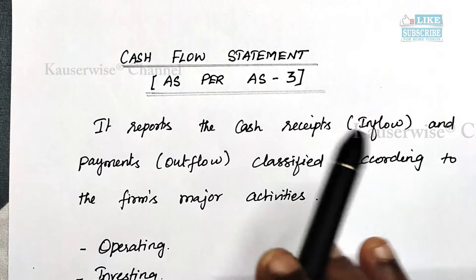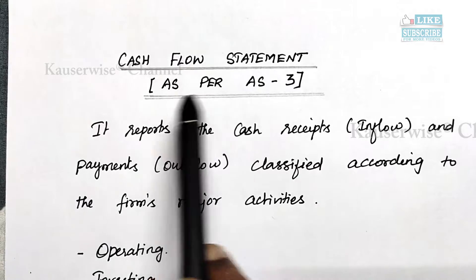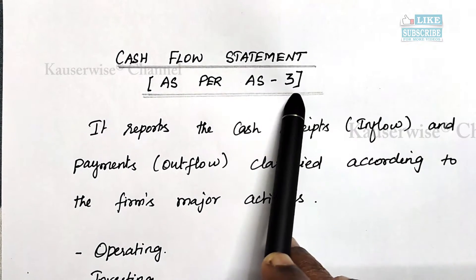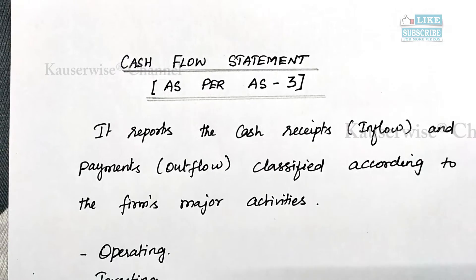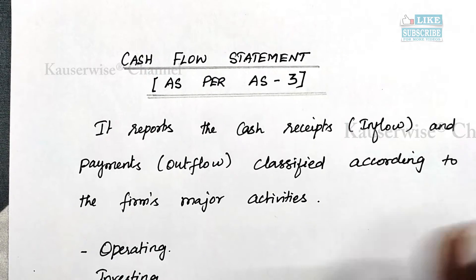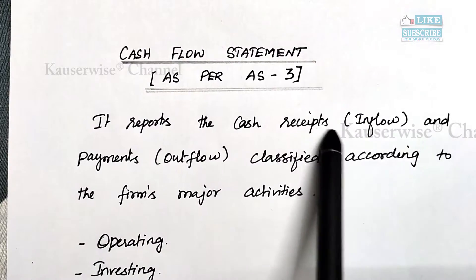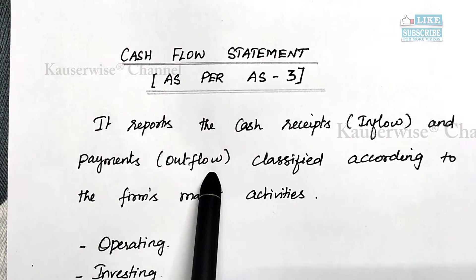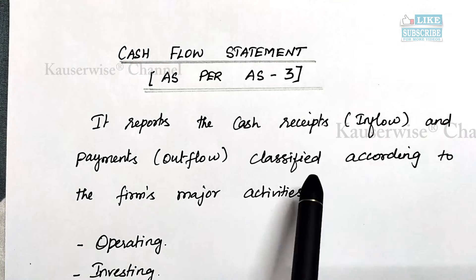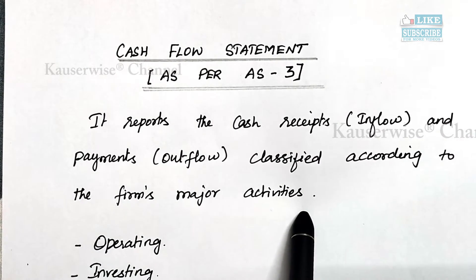Now let's get into the video. First, we should understand the meaning of cash flow statement as per accounting standard 3. The cash flow statement reports the cash receipts — that is, inflow of cash — and payments — that is, outflow of cash — classified according to the firm's major activities.